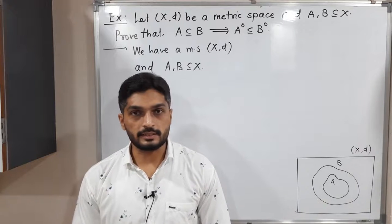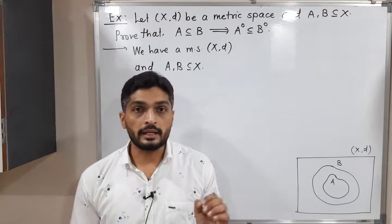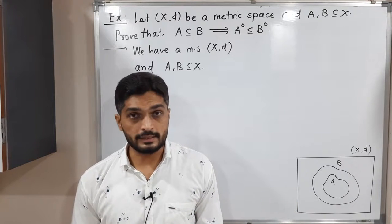Hi everyone, let us discuss this result. In this result, we have a metric space (X,d) and A and B be two subsets of X.